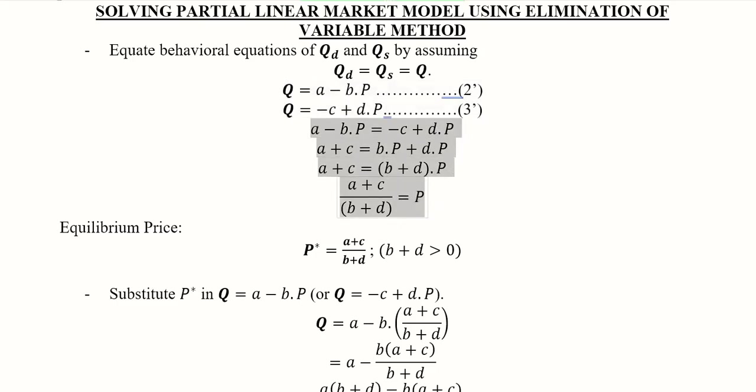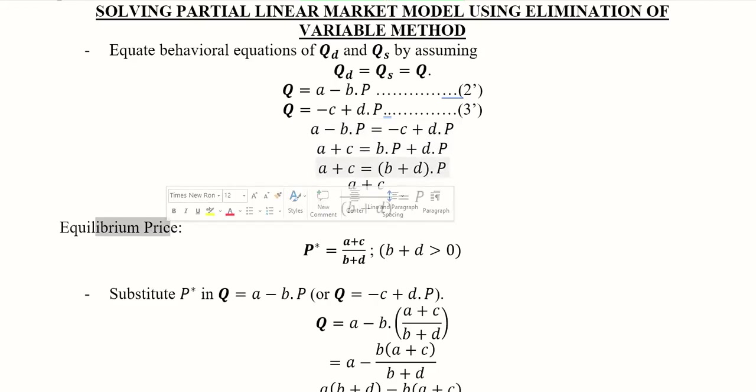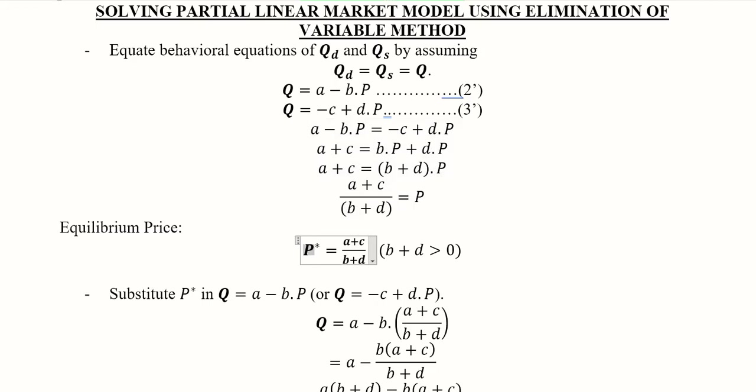By comparing these equations we can get to the equilibrium price through simple algebra. This is the value of price, and here the parametric stipulation is that b and d should not sum to a negative value — it should be positive and greater than zero. If it is negative the price will be negative, and if it becomes zero the price will be undefined. In economics only a positive price makes sense — neither zero, negative, nor undefined.